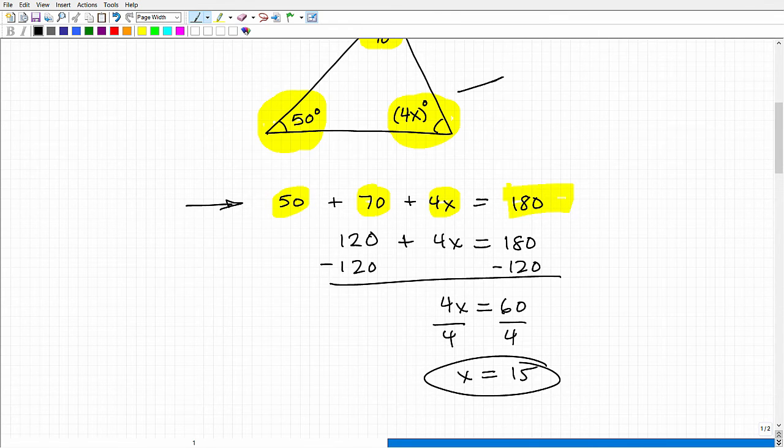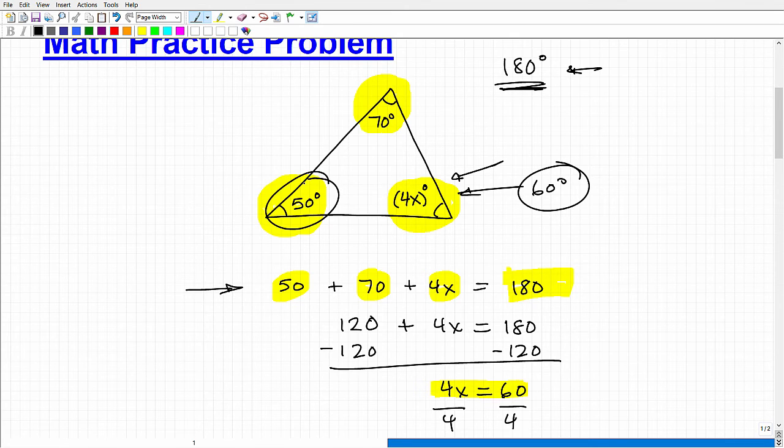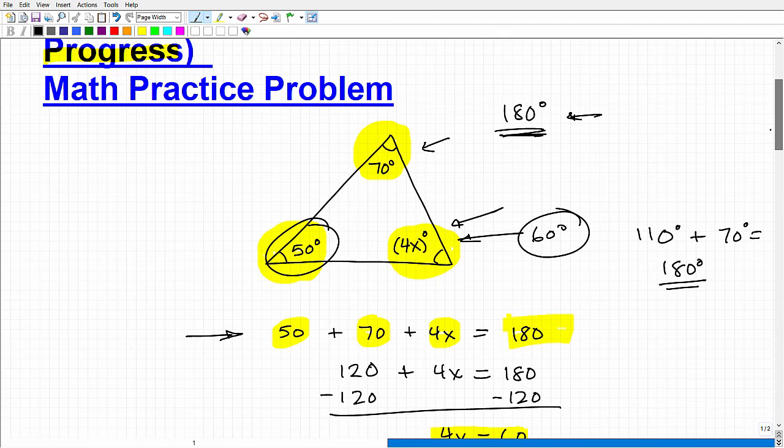But remember, my angle is 4x. So 4x is equal to 60. Hopefully, some of you picked up on that right there. 4x is equal to 60. So this would be 60 degrees right here. Now, if we did this correctly, we have 60 and 50, which would be a total of 110 degrees, right? And then we add in this 70 degrees here, and 70 plus 110 is 180 degrees. So that is correct. That was the missing angle, 60 degrees.